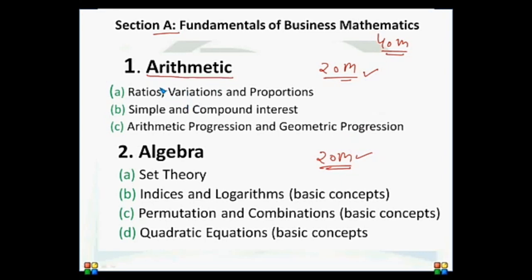In Arithmetic, the topics are ratios, variations and proportions, simple and compound interest (time value of money), and arithmetic progression and geometric progression for 20 marks. In Algebra: set theory, indices and logarithms (basic concepts), permutations and combinations (basic concepts), and quadratic equations (basic concepts) for 20 marks.